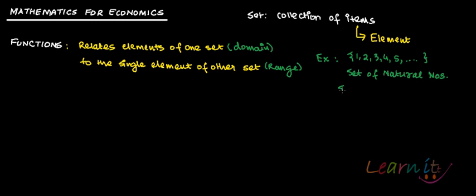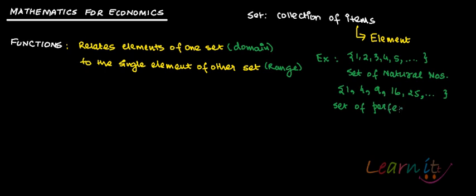Another set could be {1, 4, 9, 16, 25, and so on}. This is the set of perfect squares of natural numbers.